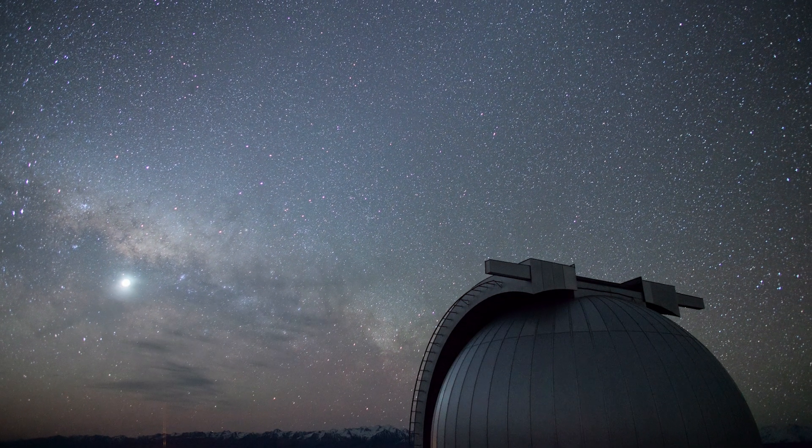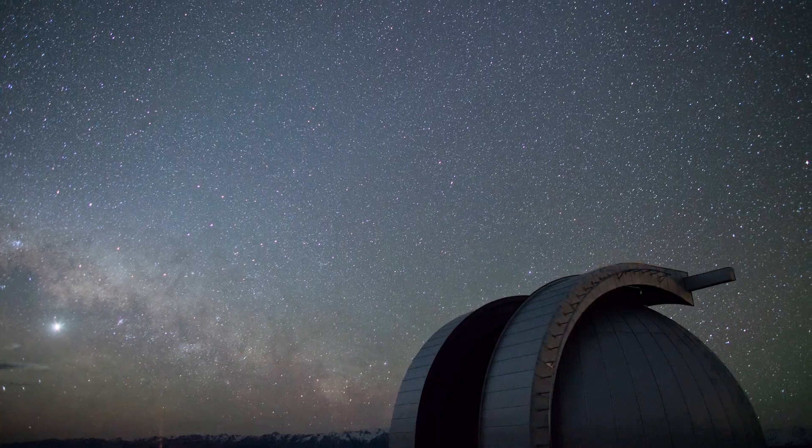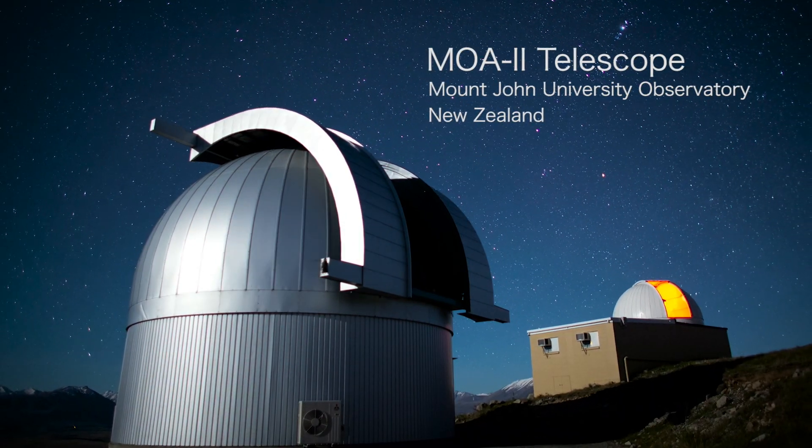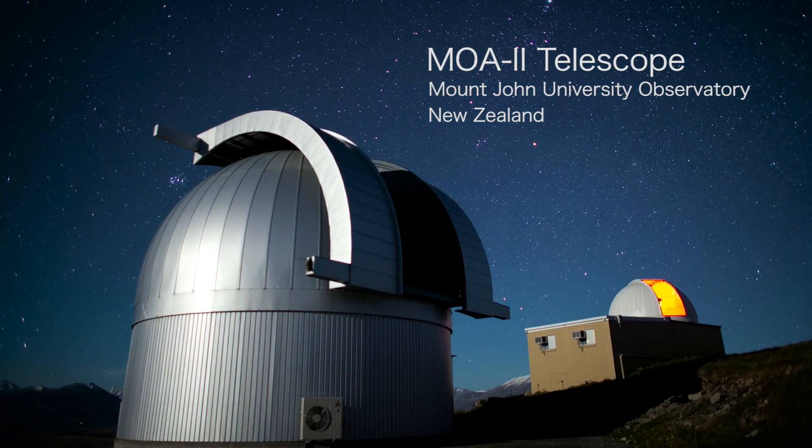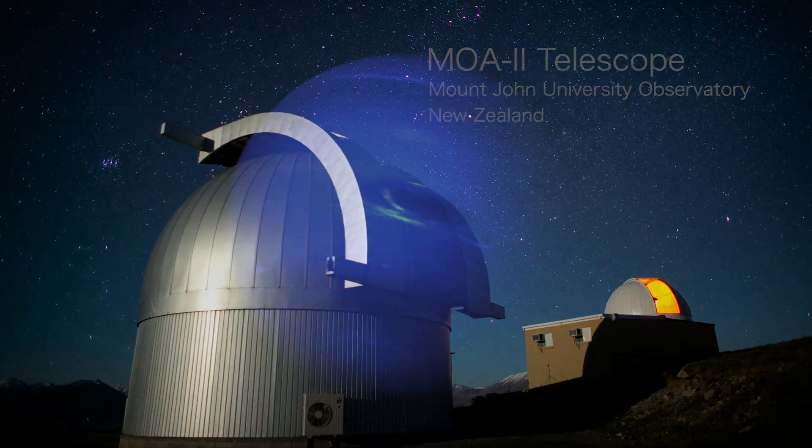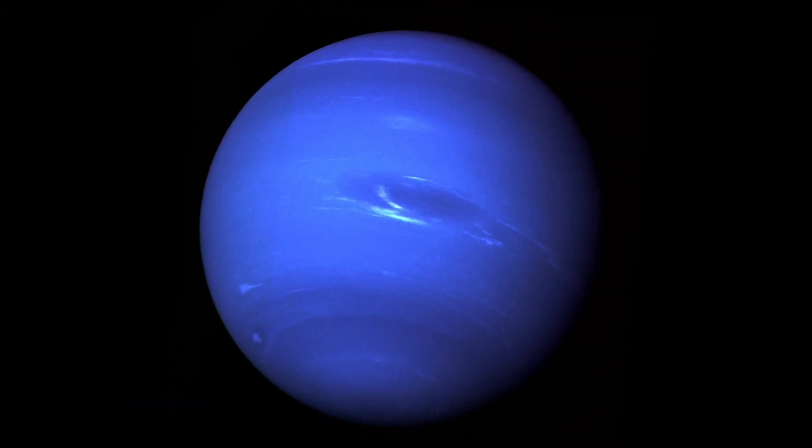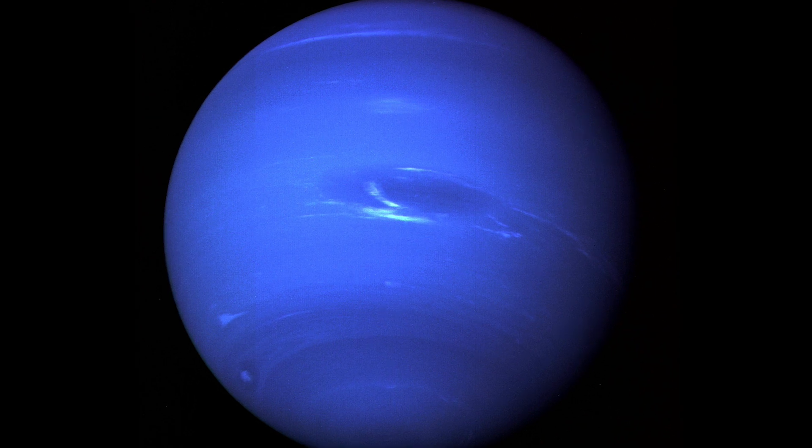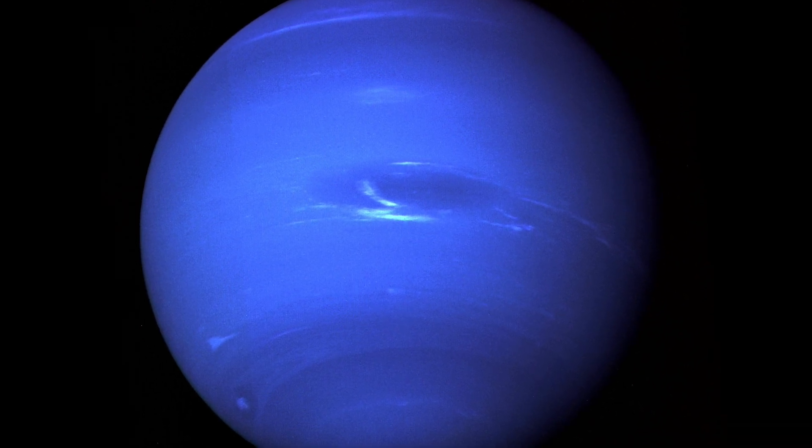A technique called microlensing promises to clarify the picture. A recent analysis of six years of data from the MOA-2 ground-based survey concludes that exoplanets similar in mass and probably composition to Neptune are likely the most common worlds in the outer reaches of planetary systems.